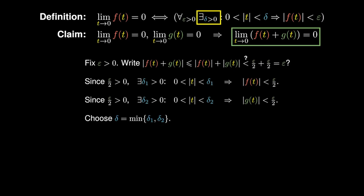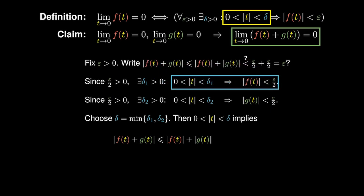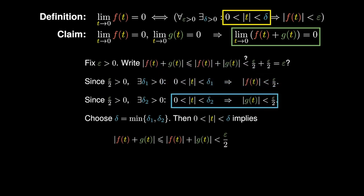When the inputs are constrained by delta, we can upper bound |f + g| via |f| + |g|. Since delta is not more than delta one, f is upper bounded by epsilon over two. Since delta is also not more than delta two, g is also upper bounded by epsilon over two. Combining these output thresholds, we obtain the output threshold epsilon, which is precisely what we wanted to show.